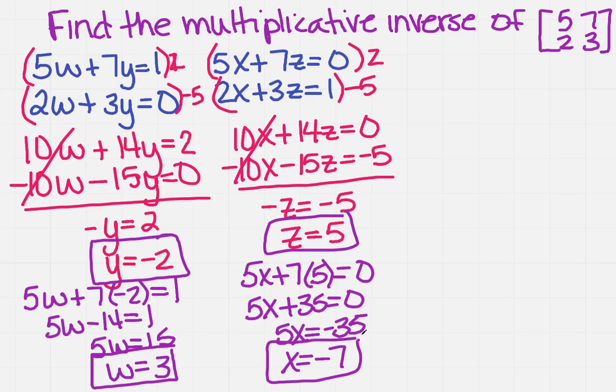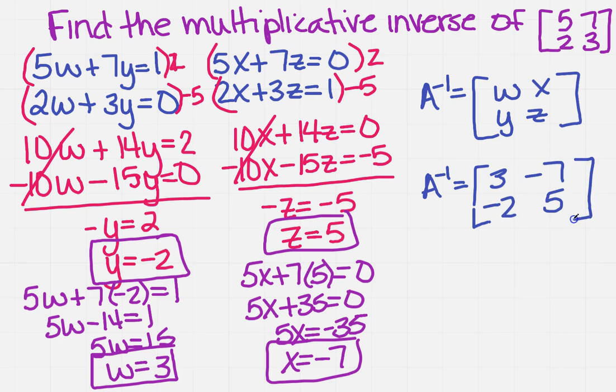Now recall from what I have actually erased, originally we said that A to the minus 1 equaled, and we did W, X, Y, and Z. So what I'm going to do now is I'm actually going to plug in the values that I just found for each of those. So A minus 1 equals, so we said W was 3, we said X was minus 7, Y was minus 2, and Z was 5. So this is the multiplicative inverse of the given.